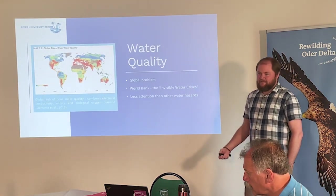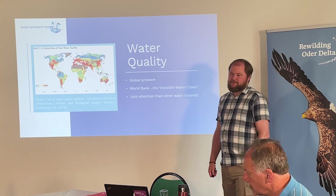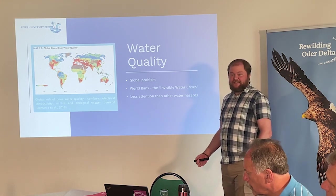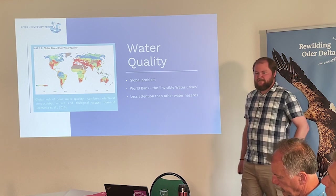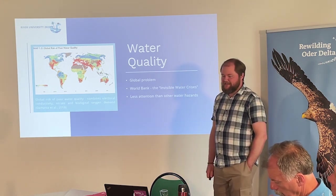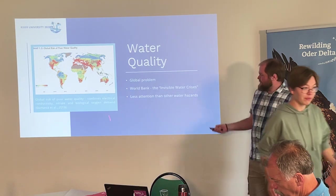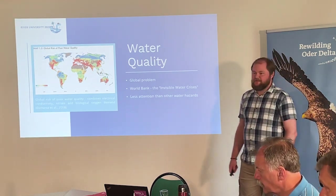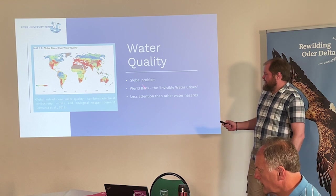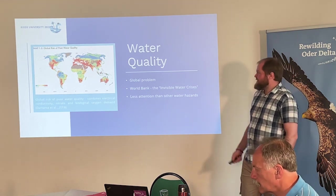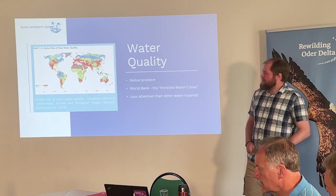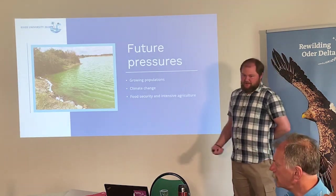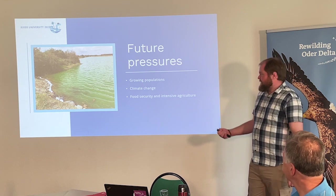Water quality is a global problem. It impacts countries across the spectrum of developmental levels, and perhaps compared to other issues such as flooding and droughts, it hasn't historically had the same level of visibility. This map integrates a few different water quality parameters to show high-risk areas across the world. It was compiled by the World Bank in their report 'The Invisible Water Crisis,' and we can see that a large portion of the world, across different developmental levels, is at high risk.